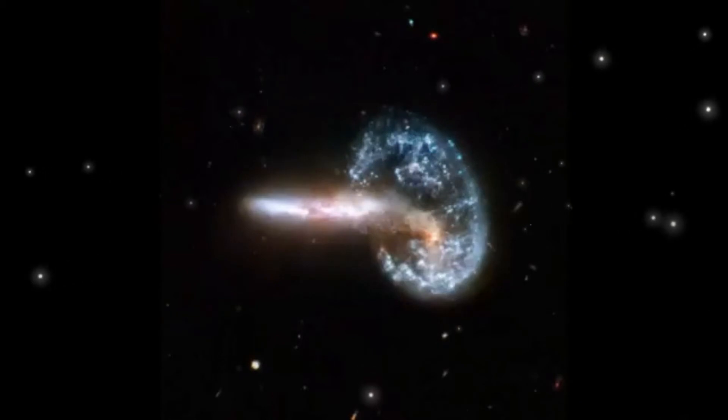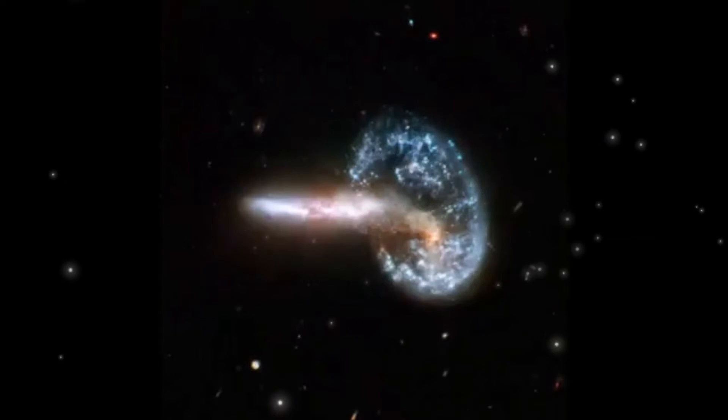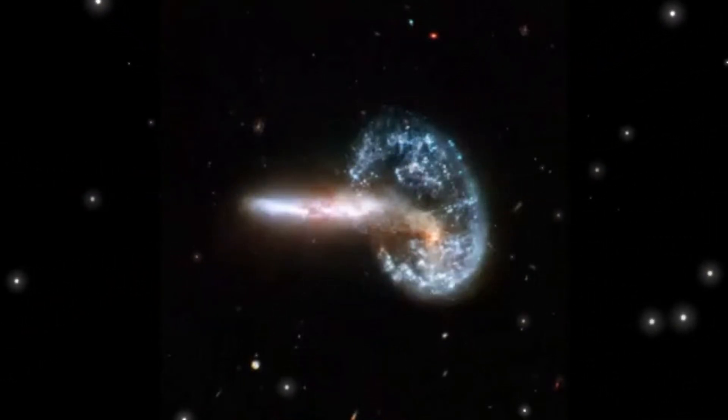Most collisional ring galaxies manage to hold onto a nucleus in the center of the ring, but sometimes the disturbance is so large that the nucleus is completely destroyed.